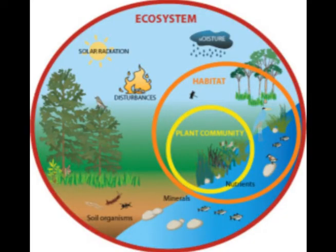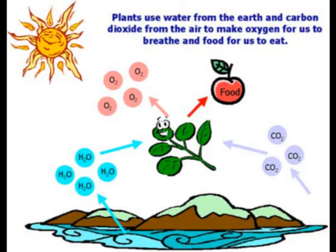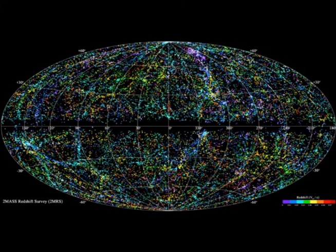Earth is a system too. It has many processes which make things alive and keep things going. Without them, no life would be here — Earth itself wouldn't function. But Earth needs the sun, and the sun needs something else in order to exist. So everything, everything in the universe is a part of a system. It has to be, otherwise it couldn't function.